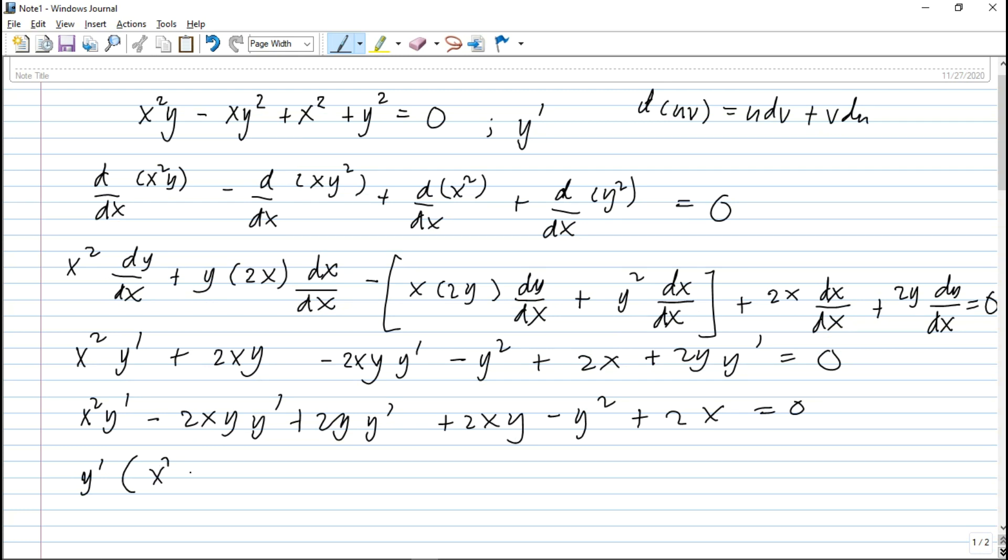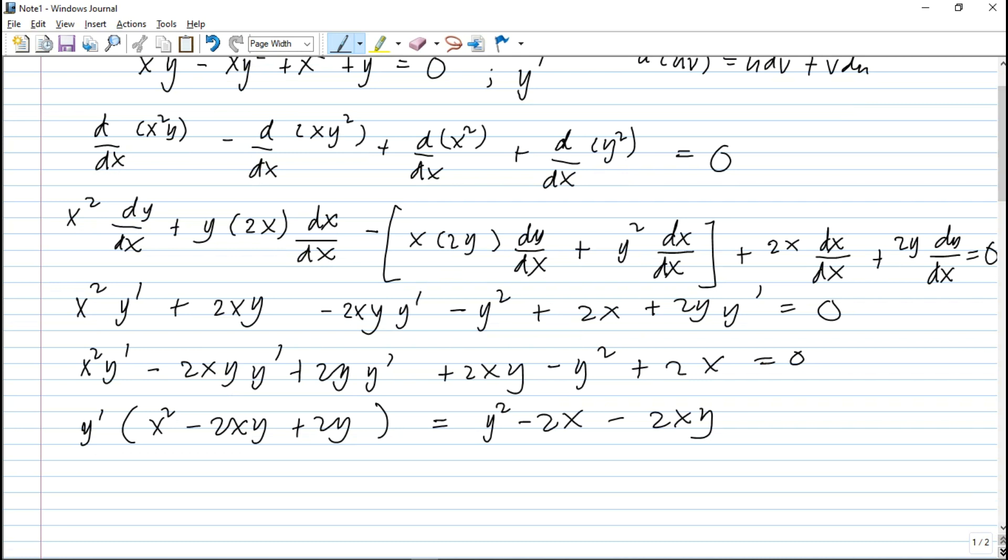So, y prime, quantity that is x squared minus 2xy plus 2y. Then, we have here equals. Ilipat natin sa kabila. This becomes y squared minus 2x minus 2xy. Divide both side by this expression here, so y prime is equal to y squared minus 2x minus 2xy divided by, you have here x squared minus 2xy plus 2y.